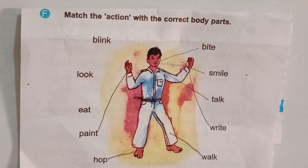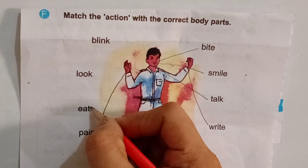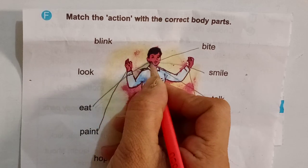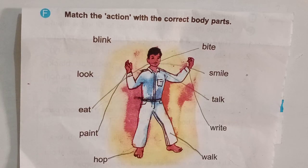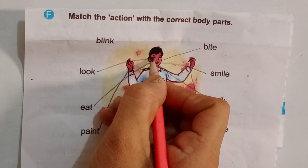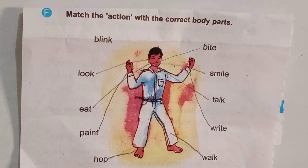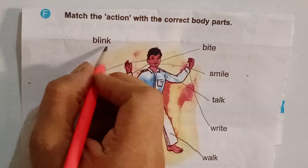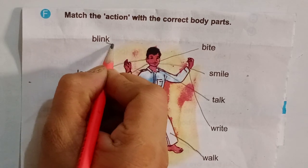How can we eat? We can eat with our mouth. So, you will match the word eat to mouth. How can you look? You look with your eyes. So, you will match the word look to eyes. How can we blink? We can blink with our eyes. So, you will match the word blink to eyes.